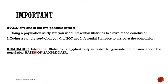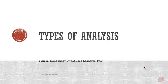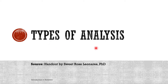Inferential statistics is applied only in order to generate a conclusion about the population — the large group of data — based on the sample data, the small representative data. That's why it's called inferential statistics: it infers that from this sample data, this result indeed happens in the population. So that's it for this video on types of analysis. Thank you very much for watching and see you in the next video.